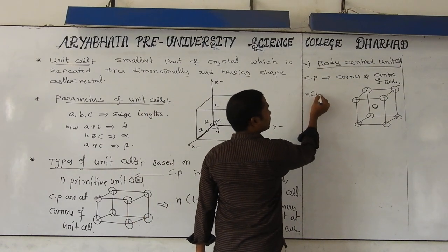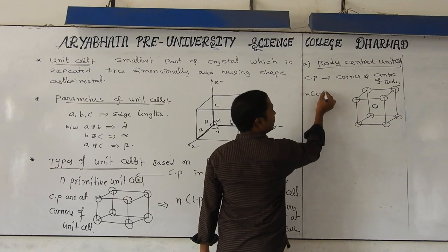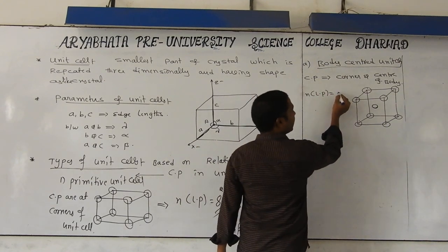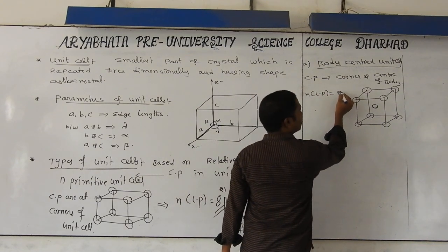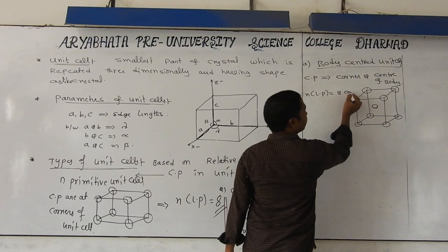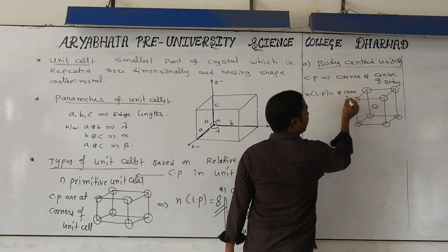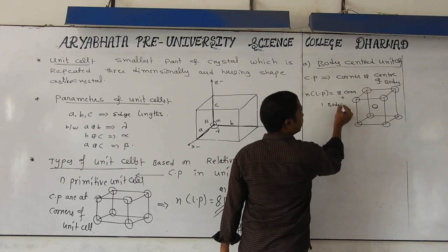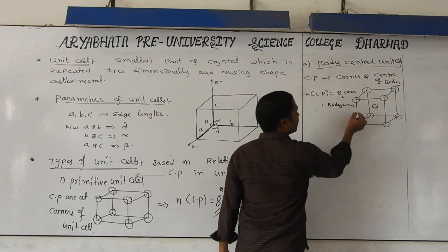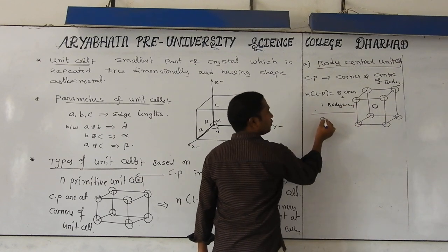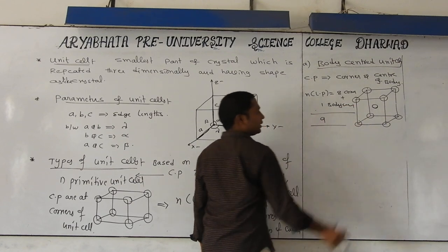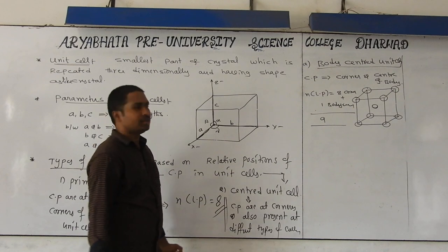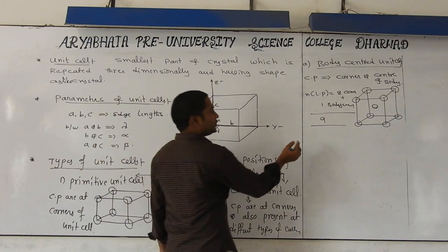Number of lattice points in body-centered unit cell: eight corners will be there and also one body center will be there. Together, that is 9 lattice points. So number of lattice points in this will be nine.